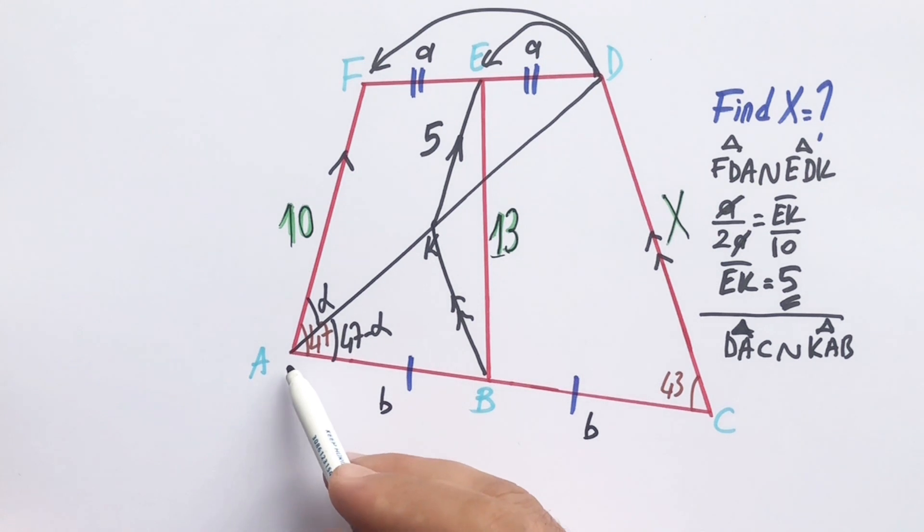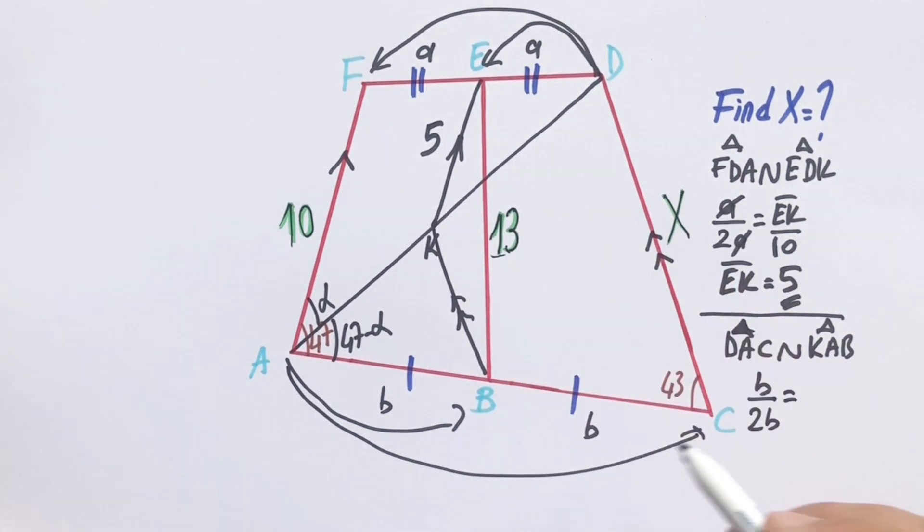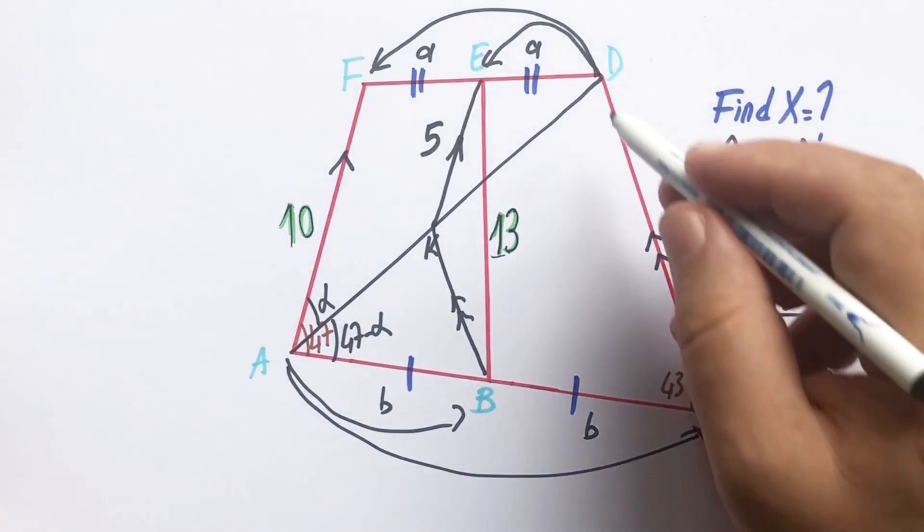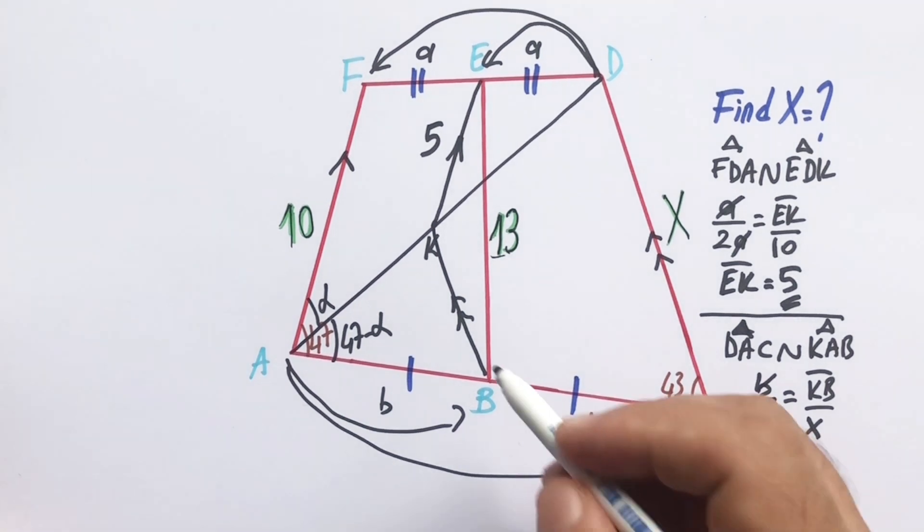Let's call here B units. B over 2B equals KB over X. So KB is going to be X over 2 units.